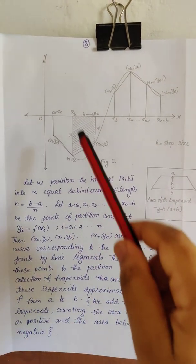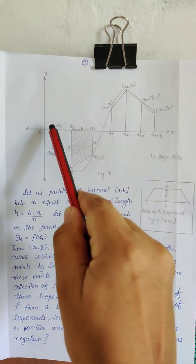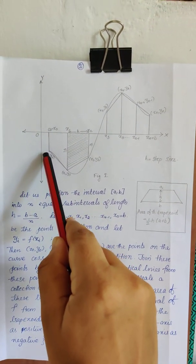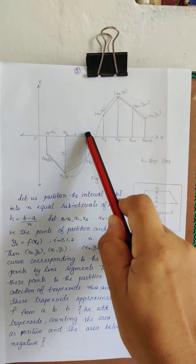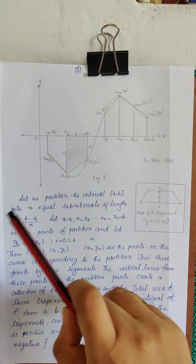Now, draw vertical lines from this point x0 to the point x0, y0. From x1 to this x1, y1. From x2 to x2, y2.